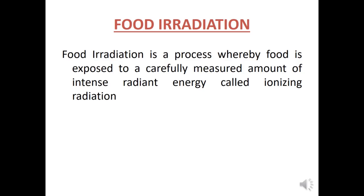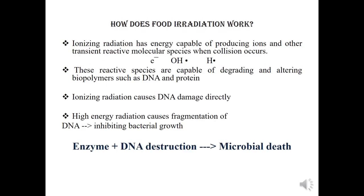How does food irradiation work? Ionizing radiation has energy capable of producing ions and transient reactive molecular species. When collision occurs, electrons are removed, and these reactive species are capable of degrading and altering biopolymers such as DNA and protein. The DNA and protein structures of microorganisms are damaged, and ionizing radiation causes DNA damage directly.